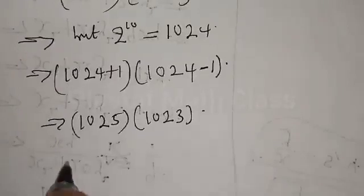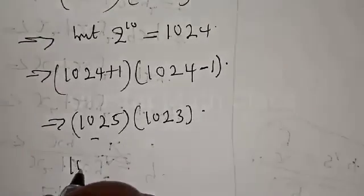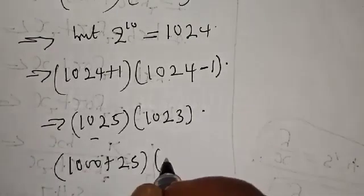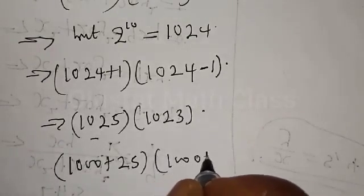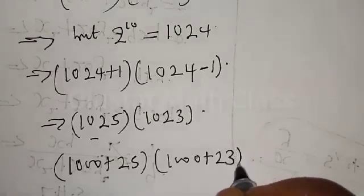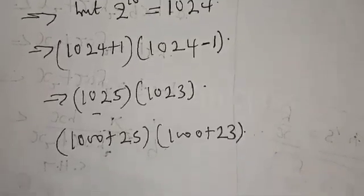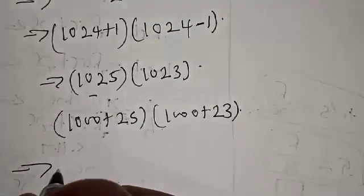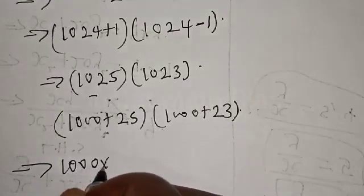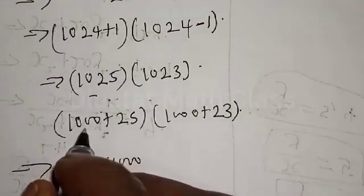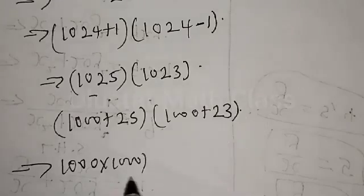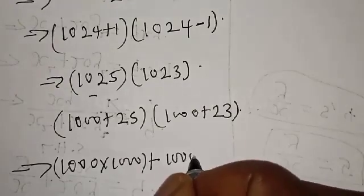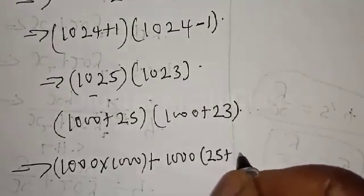Now this can be expressed as 1000 plus 25, into 1000 plus 23. Expanding the bracket, this gives us 1000 multiplied by 1000 — that is 1000 times 1000 — plus 1000 into 25 plus 23.